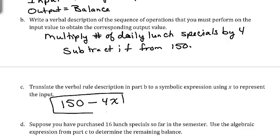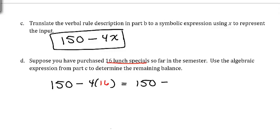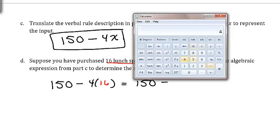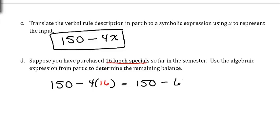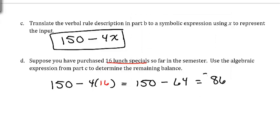Translating this to a symbolic expression using X for the input: the balance is 150 − 4X. Suppose we have purchased 16 lunch specials — we replace X with 16: 150 − 4(16) = 150 − 64 = $86 remaining on the card. That finishes up our lecture.